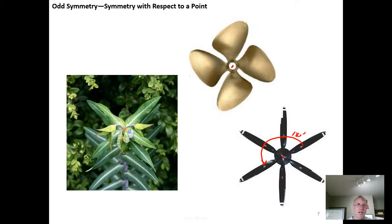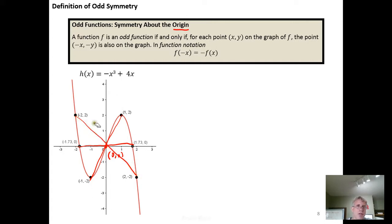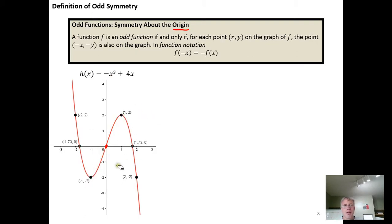This is an example of a plant with odd symmetry — clearly a rotation by 180 degrees of those leaves will get things to match back up. In function world, we're interested in reflecting through a specific point: the origin, or the point (0, 0). If we look at a function and establish that reflecting points through the origin lands them on corresponding points on the graph, then we have odd symmetry. We can also think about rotating this graph 180 degrees — this bowl here would land inside the other bowl, and the graph would match up. So it has 180-degree rotational symmetry, or reflective symmetry through the origin.